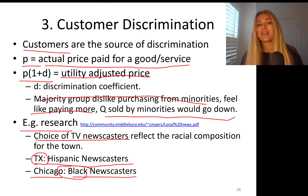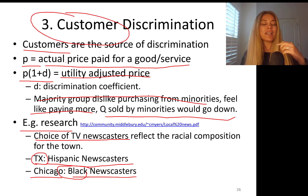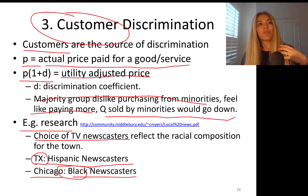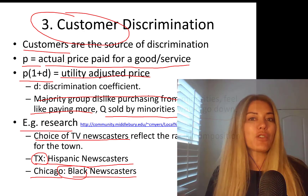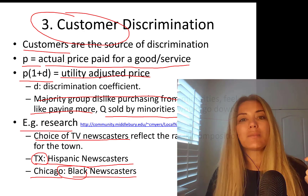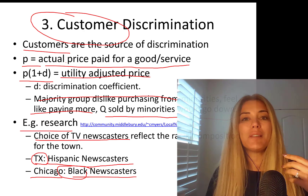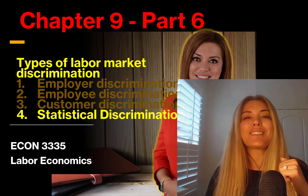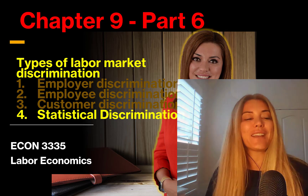This is an example of customer discrimination. The price is P, but customers feel like they're paying more when buying from a group they don't want to buy from. As an employer, if there's no way to hide your workers from your customers, you may end up paying those workers less. In the next part, we'll talk about statistical discrimination.